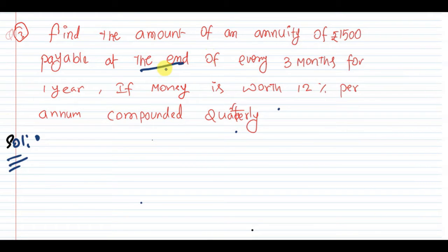So it is paying at the end, that means it is the case of ordinary or regular annuity. That is the first thing you should understand.